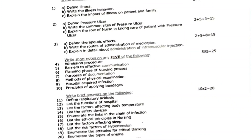Short notes: 4th: admission procedure. 5th: barriers in effective communication. 6th: planning phase of nursing process. 7th: purposes of documentation. 8th: methods of physical examination. 9th: hospital acquired infection. 10th: principles of applying bandages. Brief answers: 11th: define respiratory acidosis. 12th: list the functions of hospital. 13th: list factors affecting body temperature. 14th: list the safety devices. 15th: enumerate the links in the chain of infection. 16th: list ethical principles in nursing. 17th: list factors affecting sleep. 18th: list risk factors of hypotension. 19th: enumerate the attitude for critical thinking. 20th: enumerate the types of enema.